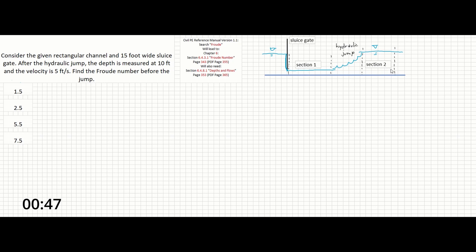I'll be the first to admit that I find this problem annoying. It's totally solvable, but it's going to make you solve for a bunch of other unknowns on both sides of the hydraulic jump before you can solve for the actual Froude number in section 1 before the jump, which is what they're looking for. So let's get to it.